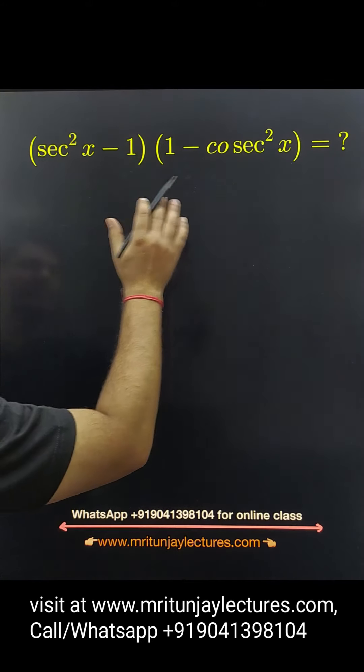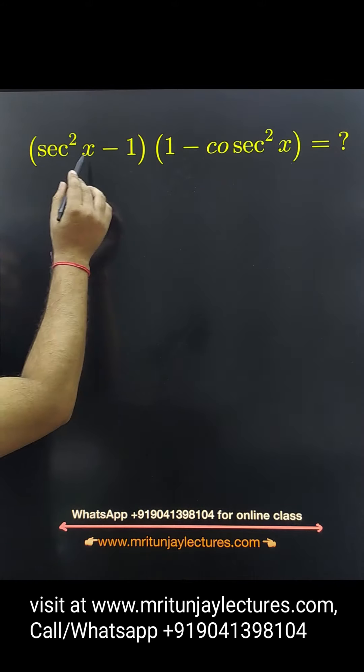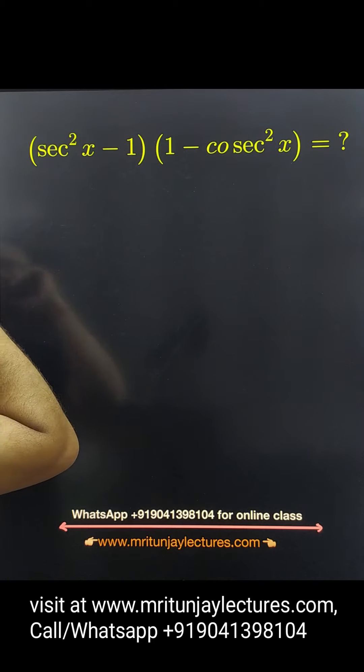Now question of the day, how can you determine that value? Simply sec square x is also written as 1 plus tan square x.